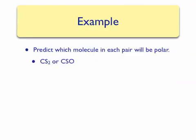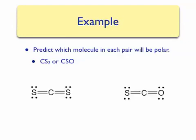Now we will practice predicting whether or not a molecule is polar. To do this, we must consider the geometry of the molecule as well as the electronegativities of the atoms contained in the molecule. Our first example compares carbon disulfide with CSO. The first thing we should do is assign a molecular geometry to each molecule by drawing a Lewis structure. Note the similarity of these Lewis structures to carbon dioxide. If we look at each carbon atom, we see that there are two sigma bonds surrounding it, giving us linear geometries for both molecules.